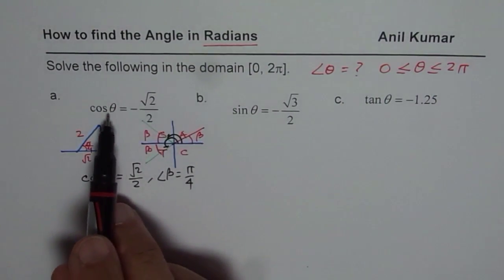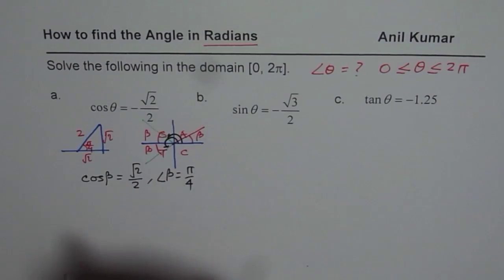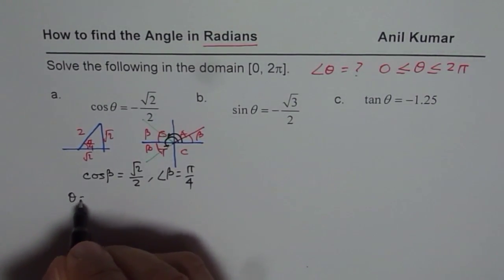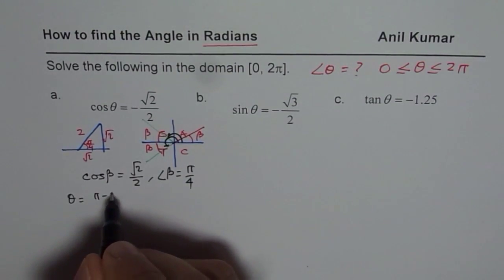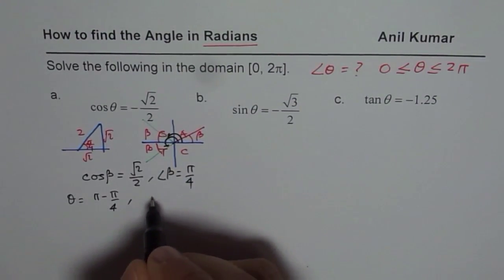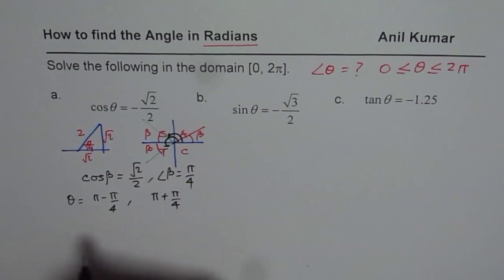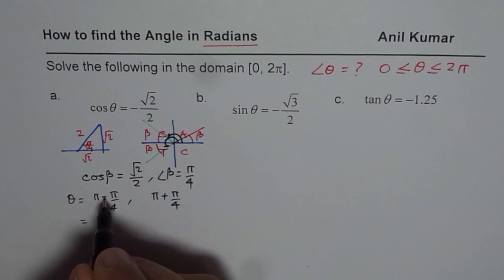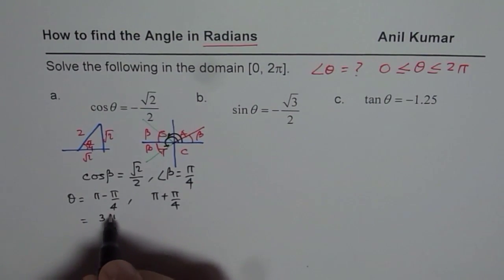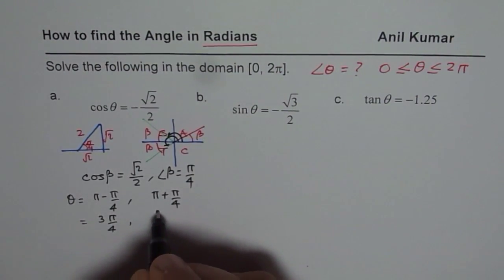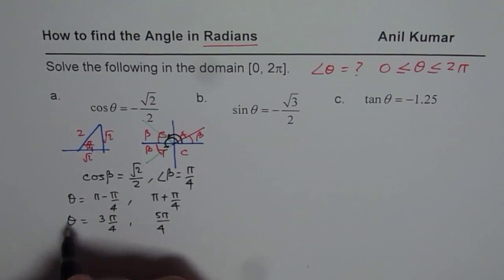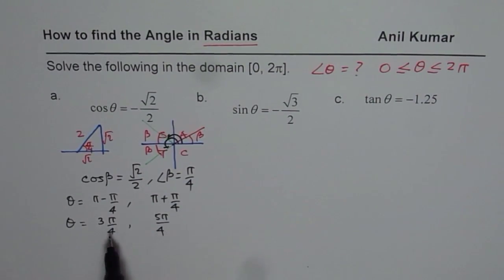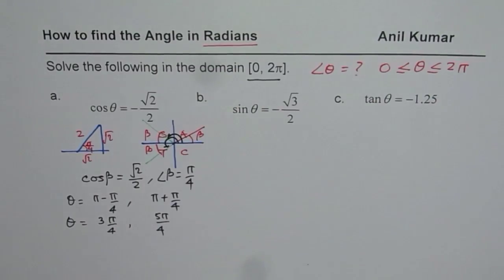But what is the angle θ, the principal angle? We have two possible solutions here. The first one is in quadrant 2, which will be π - π/4, and the second will be π + π/4. When you add them up, 4 minus 1 is 3, so we get 3π/4 as one answer, and 4 plus 1 is 5, 5π/4 as the other answer. These are the two solutions for the given equation, all solutions in the given domain.